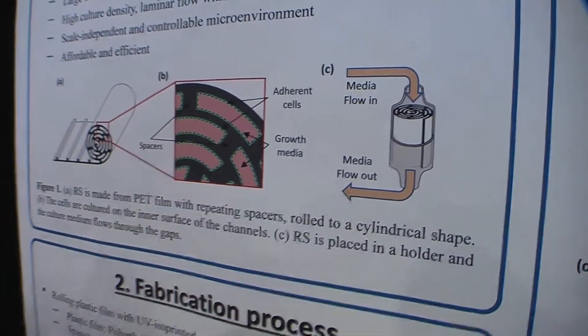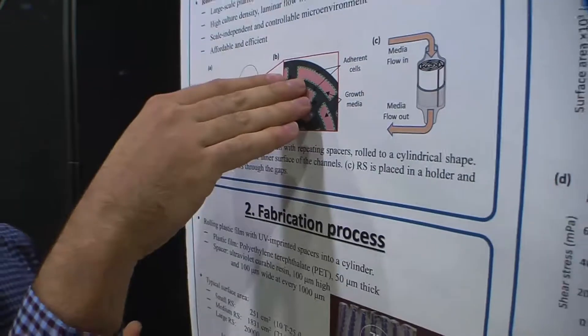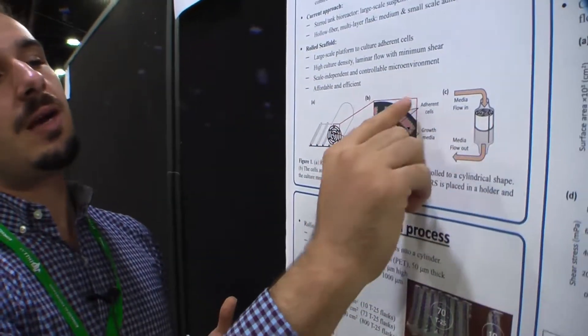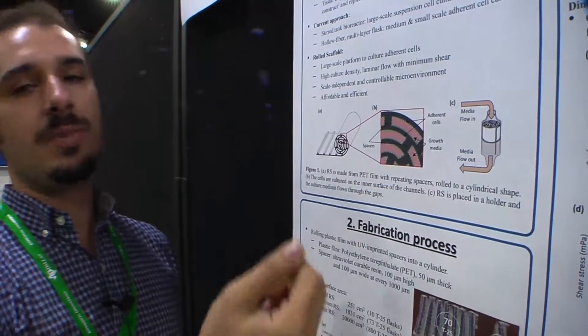The media passes through this chamber, and we put everything inside a holder so we can continuously circulate media through it.